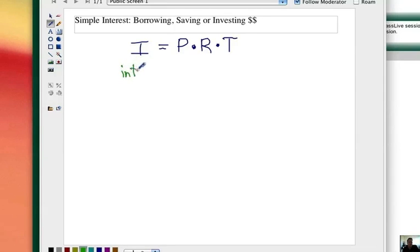I stands for interest. If you're borrowing the money, that's the interest, that's the extra amount that you pay the bank for being able to use their money. If you are saving it or investing it, that's the amount of money extra you get back.